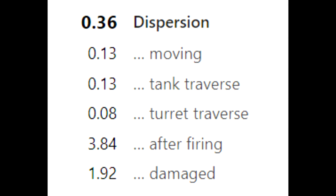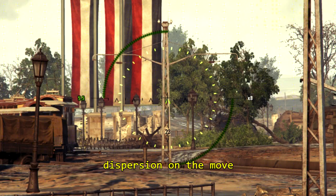For example, if your dispersion is 0.36 and you're moving and turning at the same time, you add 0.013 plus another 0.013. If you're also traversing your turret simultaneously, it adds another 0.08 on top. Those are the penalties that make up your dispersion value while you're playing.